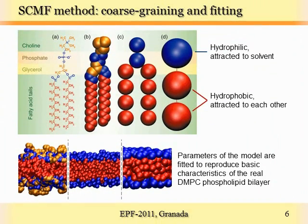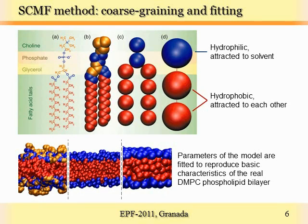In our model, we represent the phospholipid molecule as a set of spherical beads. We can do it with different amounts of detail, but in most cases just a 3-bead model is enough. In this case, we represent the hydrophilic head of the phospholipid with a bead attracted to solvent, and two hydrophobic tails of the phospholipid we represent with two beads attracted to similar beads of other molecules. This molecule can bend around the central bead, and all interaction and geometrical parameters we fit such that the output of the simulation reproduces the properties of real phospholipid membranes, such as thickness, density, and stretching modulus.